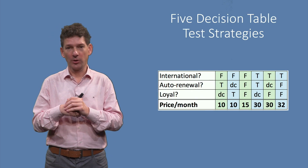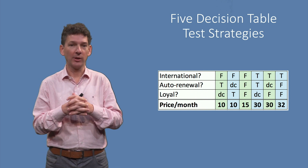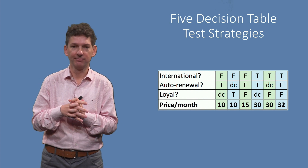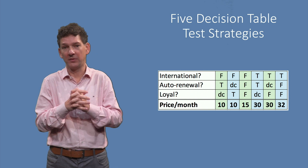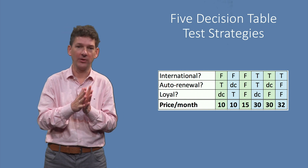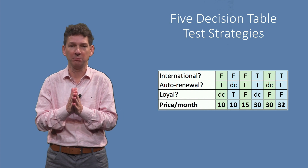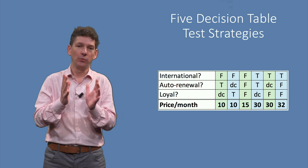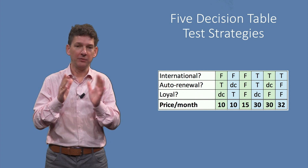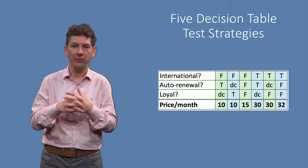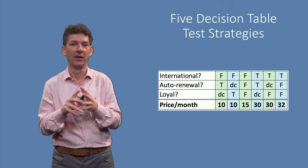To see how this works, let's look at our example decision table again. Each test case would set values to make the conditions true or false, and would then check the expected price. If you wish, now would be a good moment to briefly pause the video and think of different strategies you could follow to test this table.